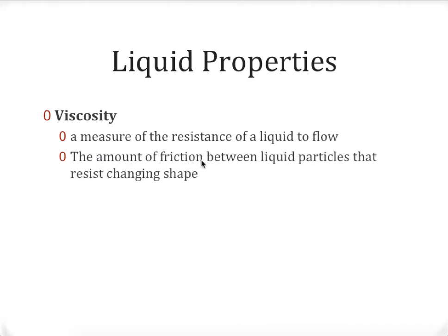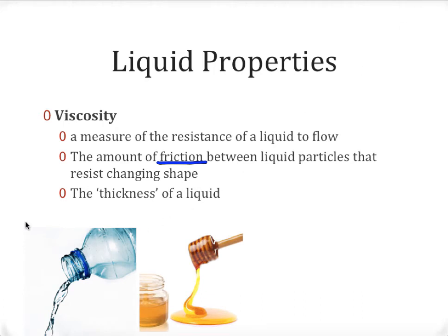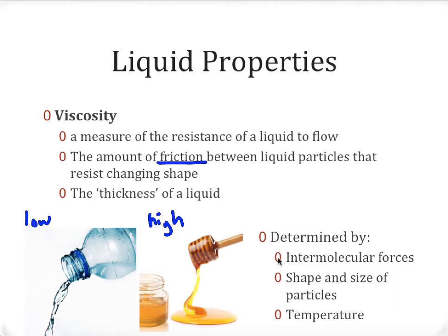Viscosity is really a measurement of the amount of friction that exists between liquid particles that resists the change of shape. You can almost think of it as measuring how liquid something is versus how solid something is — the more viscous or thicker the material, the more it behaves like a solid; the lower the viscosity, the more it behaves like a liquid. We can also think of viscosity as the thickness of a liquid. Water has very low viscosity and pours very easily, whereas honey has relatively high viscosity and is a significantly thicker liquid. Viscosity is determined by the amount of intermolecular forces present — more of those forces means more viscosity, because particles have more friction as they try to move against one another.